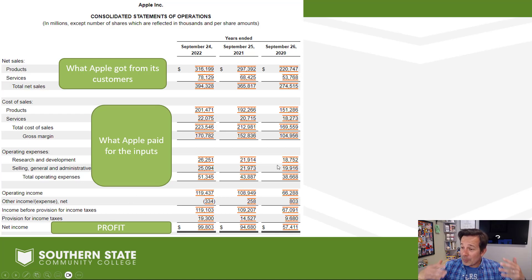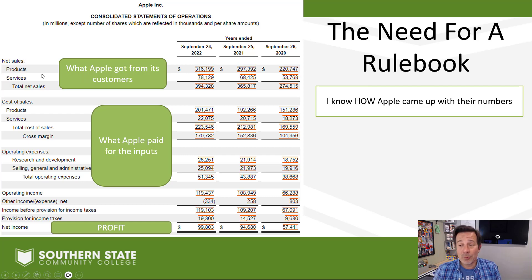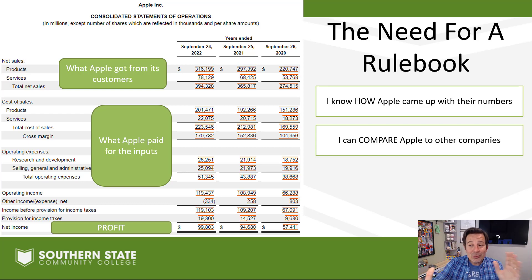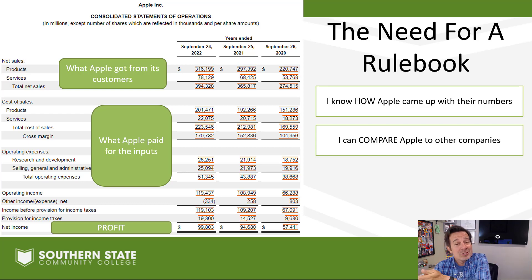So we need a rulebook to help us keep all of that straight. First of all, if we have a good rulebook, I know exactly how Apple came up with the numbers involved. When they say they sold $316 billion worth of product, I have an idea of how they came up with that number and the rules they followed. I can also compare it to other companies. If I wanted to compare Apple with Google, I can do that because they're both following the exact same rulebook. So if I'm going to invest in a company and comparing one to another, it's very beneficial to know that the comparison is apples to apples and not apples to bananas.